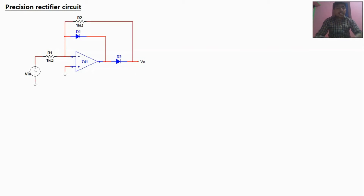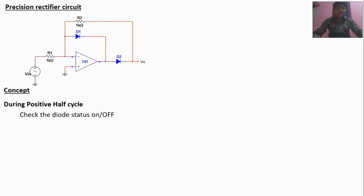For any case, if a diode is given, we have to check whether the diode is in on or off condition. Since the input is AC, we have to check the diode condition for both the positive half cycle as well as the negative half cycle. To check the diode condition, we open the diode and find the open circuit voltage across it. If the open circuit voltage across the diode is higher than the barrier voltage, the diode will be on; otherwise, the diode will be off.